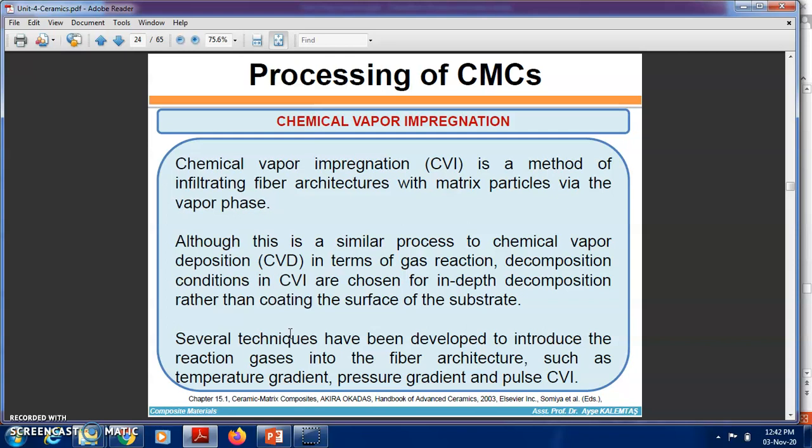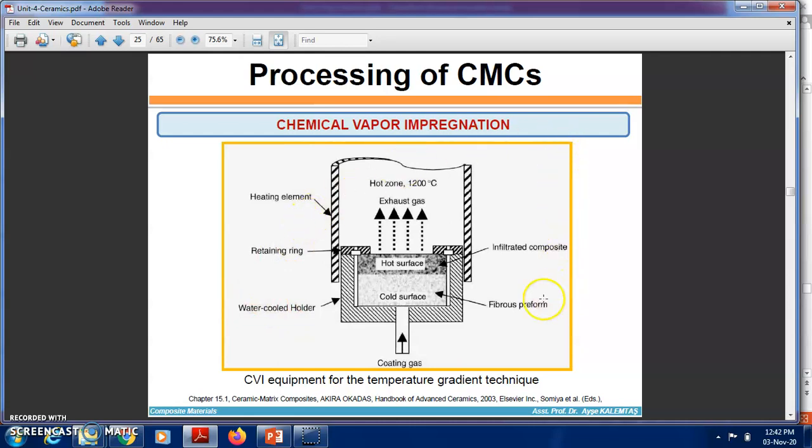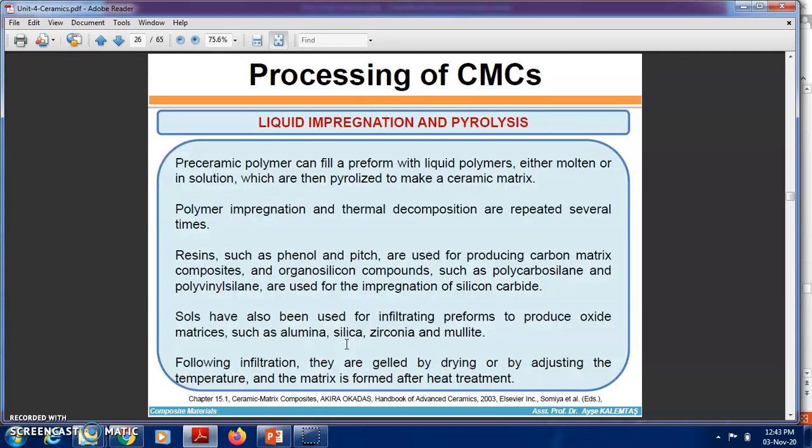Chemical vapor impregnation (CVI) is the method of infiltrating fiber architecture with ceramic particles via vapor phase. Although this is a similar process to chemical vapor deposition in terms of gas reaction and decomposition, the conditions of CVI are chosen for in-depth decomposition rather than coating the surface. Several techniques have been developed to introduce reaction gases into the fiber architecture, such as temperature gradient, pressure gradient, and forced CVI. Here you can see the CVI equipment for the temperature gradient technique with hot surface, cold surface, and fibrous preform to produce infiltrated composite.